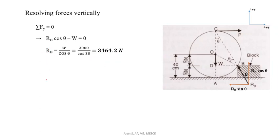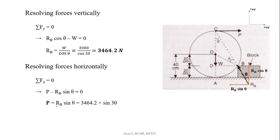Now solving forces horizontally, sigma F_x is equal to zero. P will be acting in the positive direction. R_B sin theta will be acting in the negative direction. So P minus R_B sin theta will be equal to zero. From that, P will be R_B sin theta. When R_B value and theta value are substituted, force required P will be 1732.1 N. Reaction at B is 3464.2 N. Reaction at A, when it is just to roll over, reaction at A will be equal to zero.